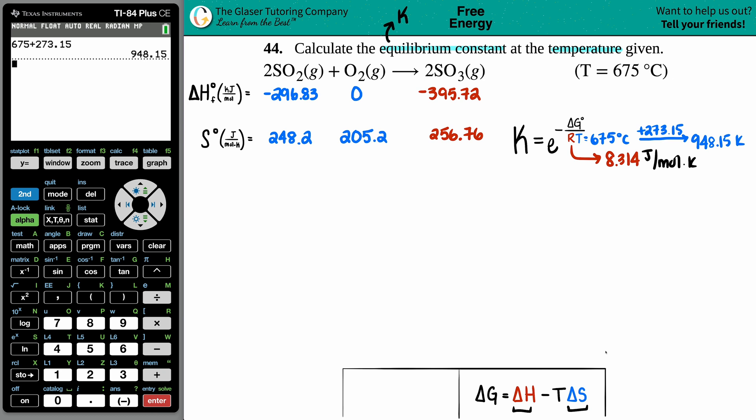The problem is we don't know the ΔH and ΔS for the whole balanced equation. That's why I have these values - I went to the back of the textbook to find the ΔH and S values for each substance. Let's start with delta H. The formula we're going to use is: ΔHrxn = Σ(ΔHproducts) - Σ(ΔHreactants).